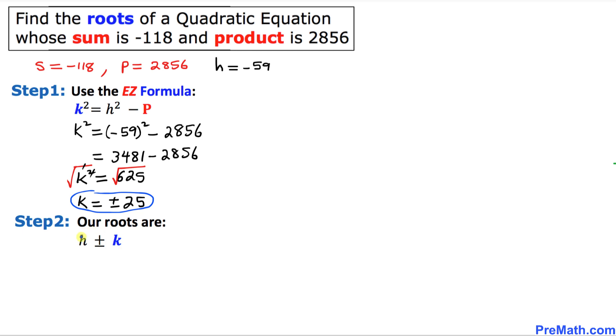And in our final step our roots are h plus or minus k. And now this really means we are going to split these numbers along these positive and negative signs. So this is going to become negative 59 plus 25 and the other one is going to be negative 59 minus 25.